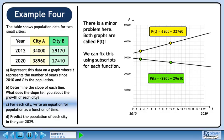There is a minor problem here. Both graphs are called p of t. We can fix this using subscripts for each function. We'll use an a for the first function since that refers to city A, and we'll use a b for the second function since that refers to city B. We now have two distinct functions.